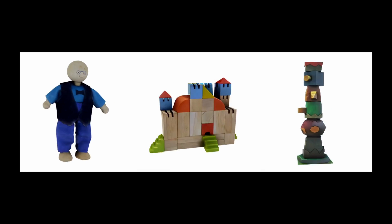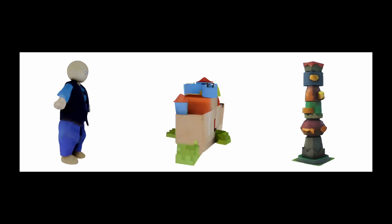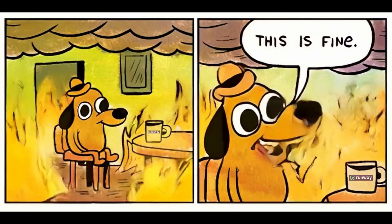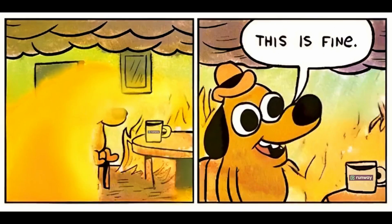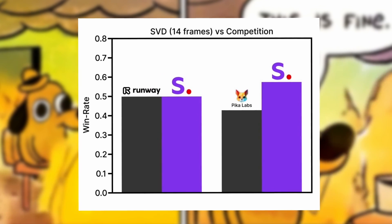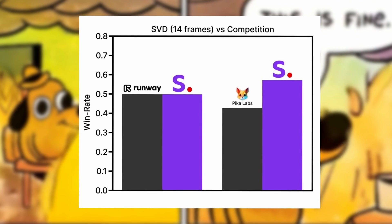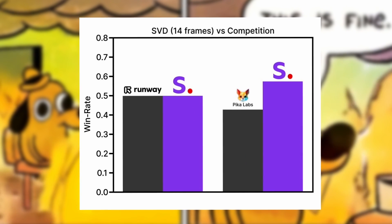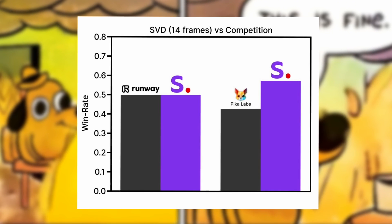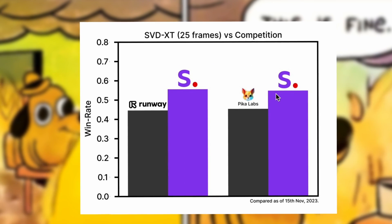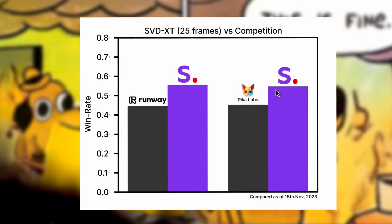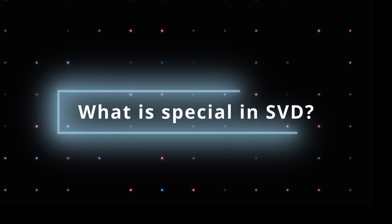There is also information about performance compared to competitors Pico Labs and Runway. According to tests, Stable Video Diffusion is on par with Runway in the case of 14 frames and much better than Pico Labs in a test with 25 frames. Stable Video Diffusion outperforms all competitors — Runway and Pico Labs — and that looks very promising.